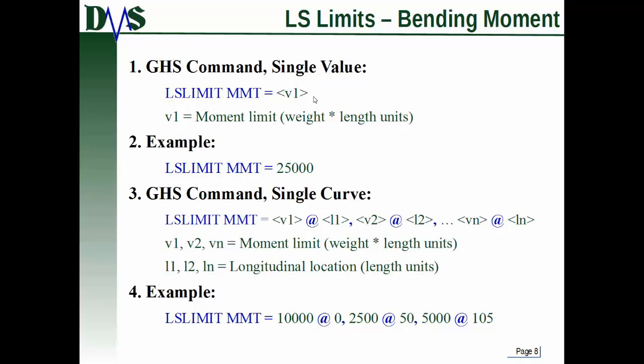The moment, again, these are usually in moments, which are force times distance, as the regulations will usually specify it. In GHS, you have to divide by gravity to get weight times distance. So weight units times length units, whatever the current units are in GHS. As an example, you type LSLIMIT Moment = 2500. That creates a single bending moment limit.